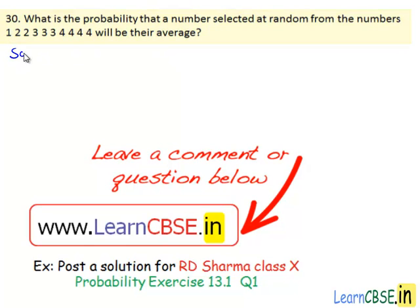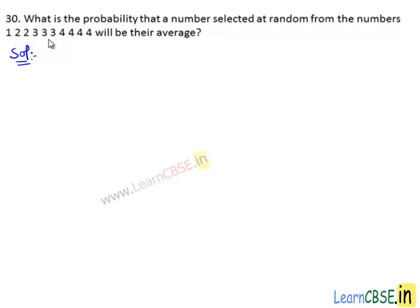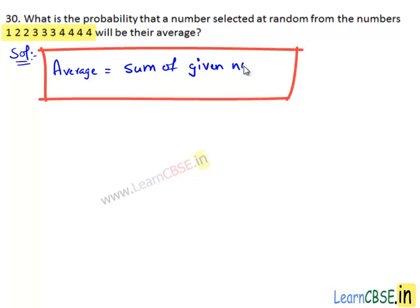Moving on to the solution. First, let us find average of the given numbers. Average equals to sum of the given numbers divided by total number of given numbers.